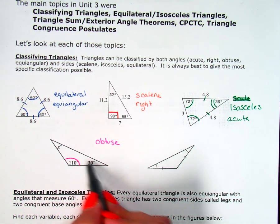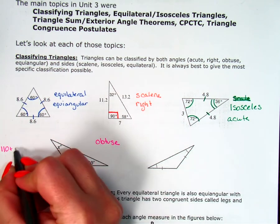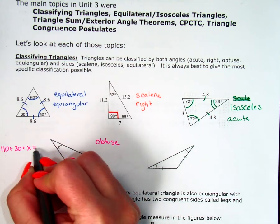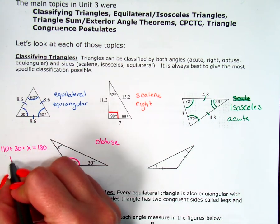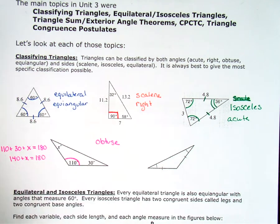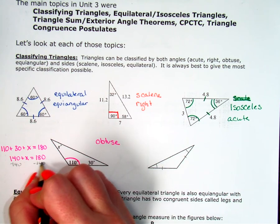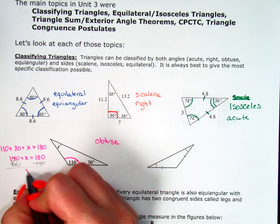So my triangle sum theorem is going to tell me that the three angles in the triangle add up to 180. So my 110 plus my 30, plus whatever this x is, I know that's going to make 180 degrees. So 110 plus 30 is 140. I'm going to take away 140, and x is going to equal 40 degrees.